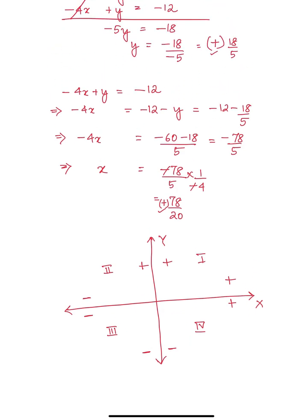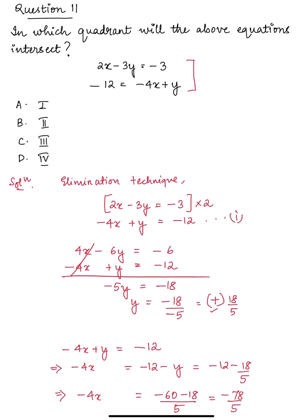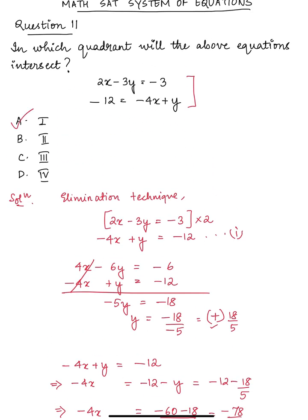So we have x and y both as positive, so it will lie in quadrant 1. So the correct answer is option A, that is 1.